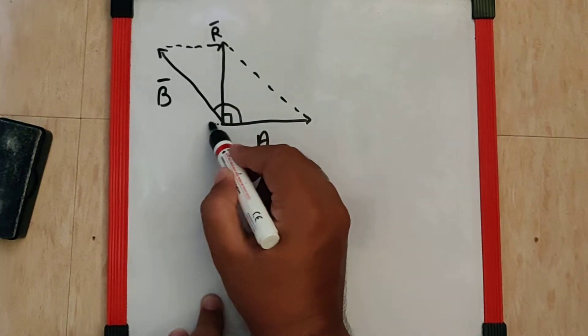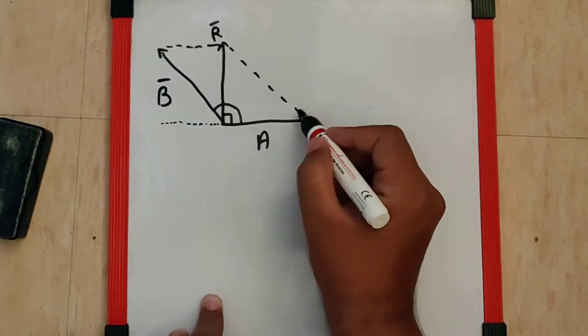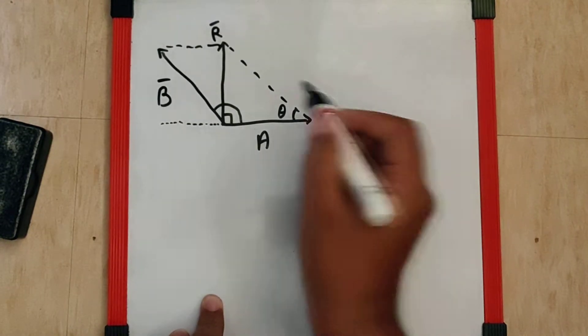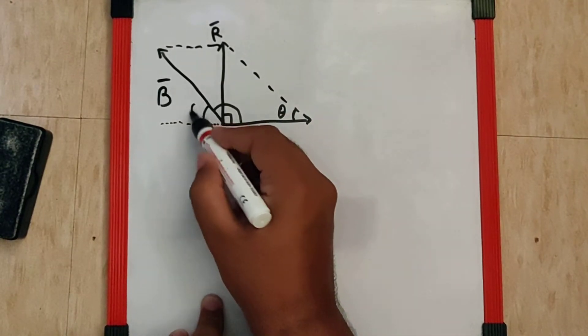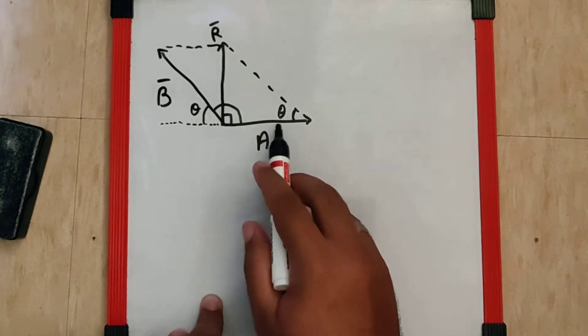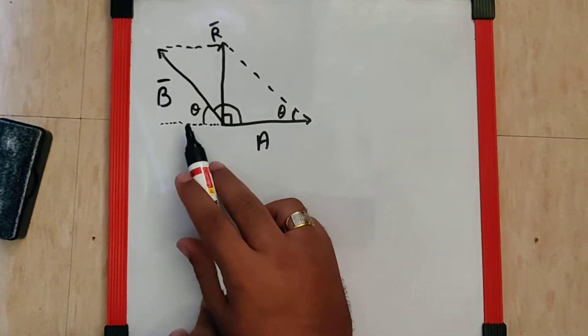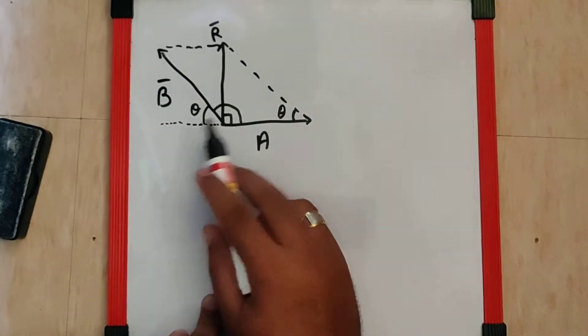If by some method we can find this angle as theta, I can say this angle is also theta because these two lines are parallel to each other in a parallelogram. By corresponding angles, these two angles must be the same.